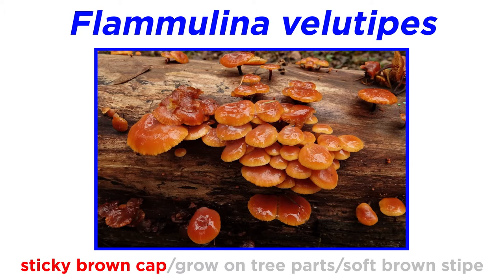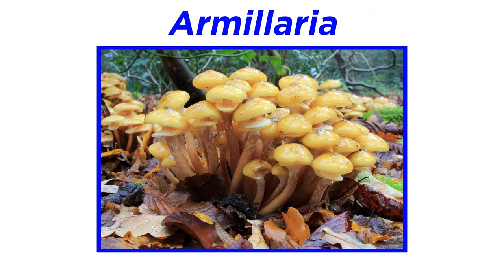In nature, Flammulina velutipes mushrooms look quite different. The mushrooms have a sticky brown cap and grow on stumps, roots, and logs of hardwood trees in late fall to winter. The mushroom's stipe is a dark brown color with a velvety soft texture, hence the common name velvet shank.